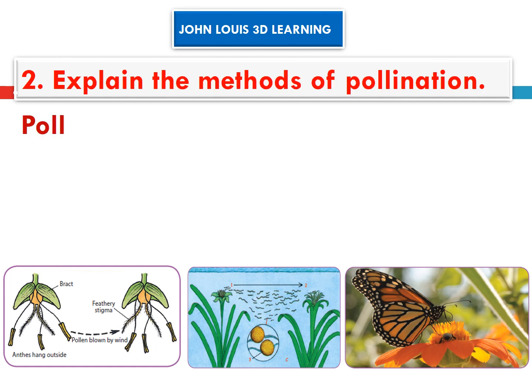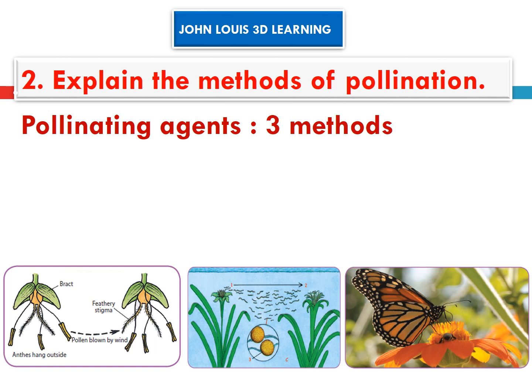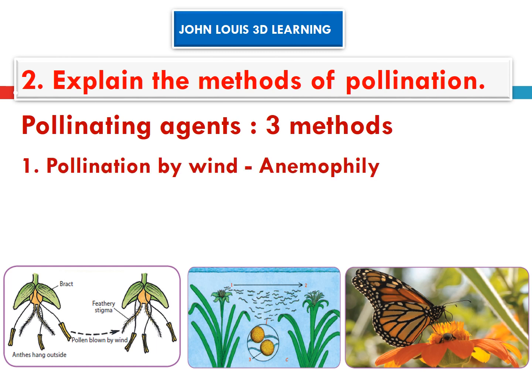The last thing is methods of pollination — pollination by agents. First, pollination by wind. The beautiful word coined for that is anemophily. Anemophily means pollination by wind.